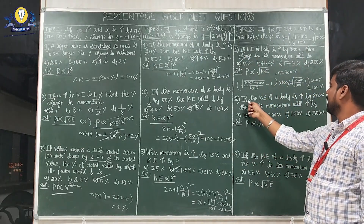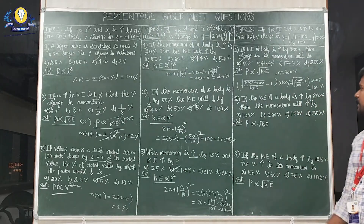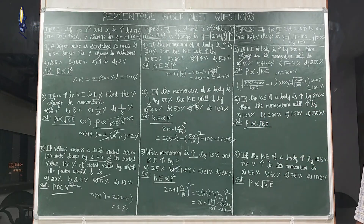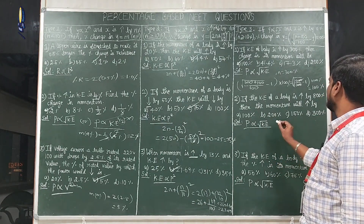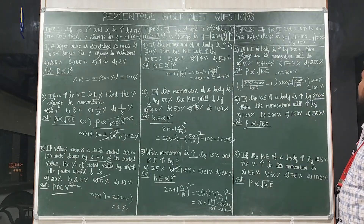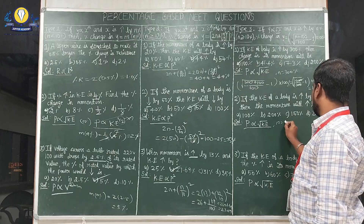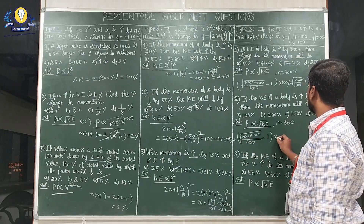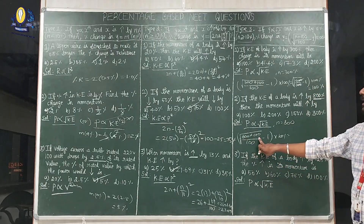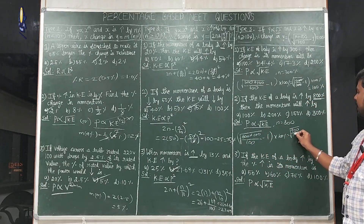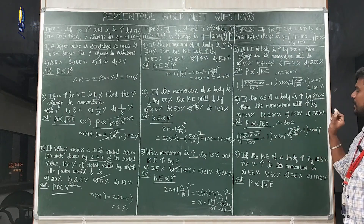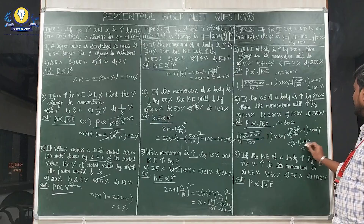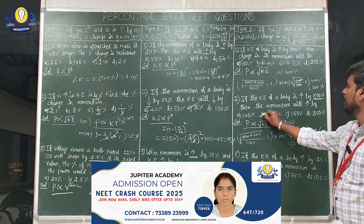Second example: if the kinetic energy of a body is increased by 800%, the momentum will increase by? Same relation: p ∝ √KE. Using the formula with n = 800: [√((800+100)/100) − 1] × 100% = [√(900/100) − 1] × 100% = [√9 − 1] × 100% = [3 − 1] × 100% = 200%. The answer is 200%.